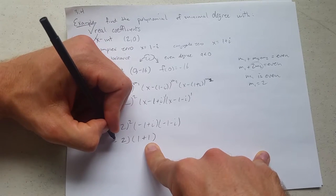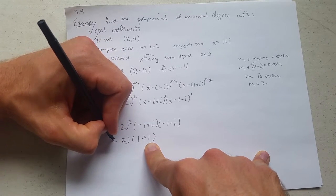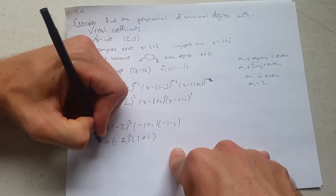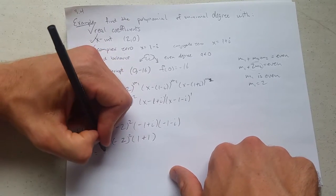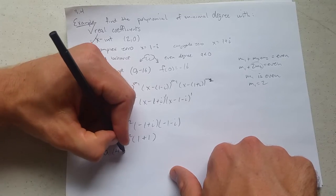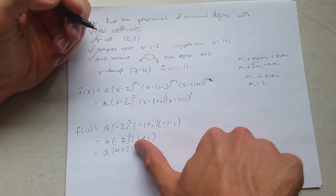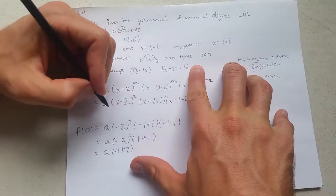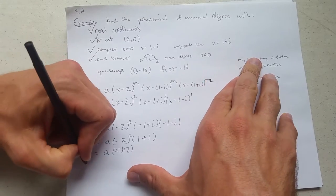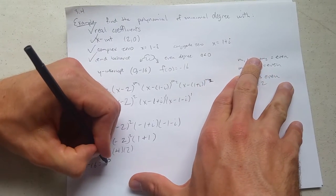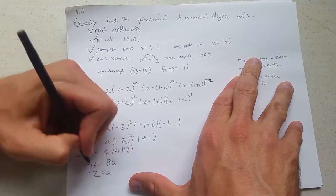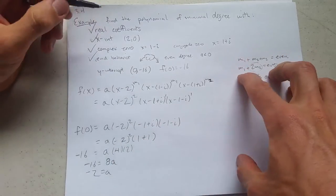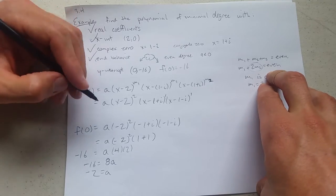Minus 2 squared is positive 2 times 2. So 4 times 2. And what is this supposed to equal? We saw up here should be negative 16. 8a divided by 8, a equals negative 2. So there we go. That's the last piece that we need for this polynomial. So we can write down our final answer now.